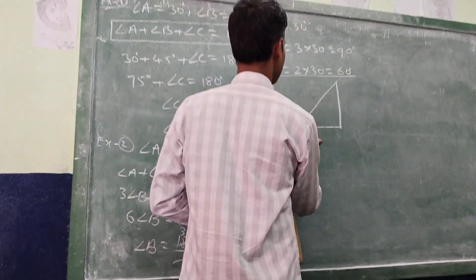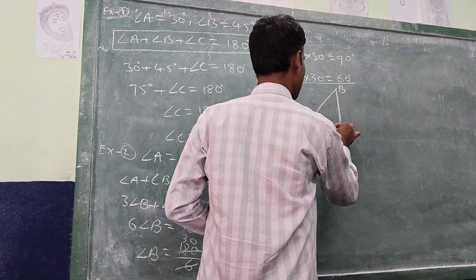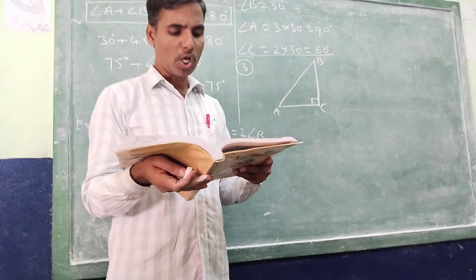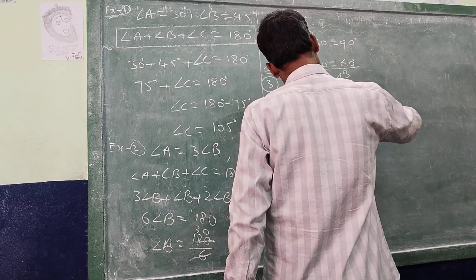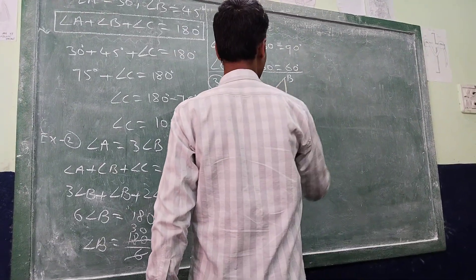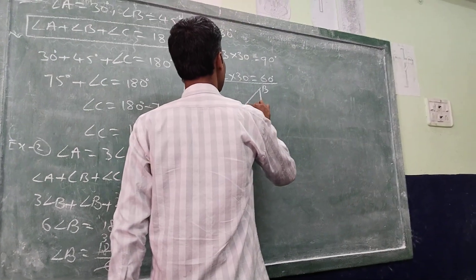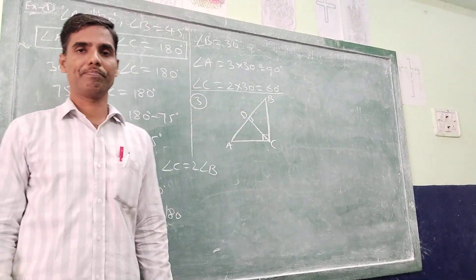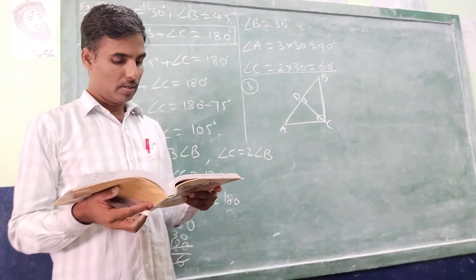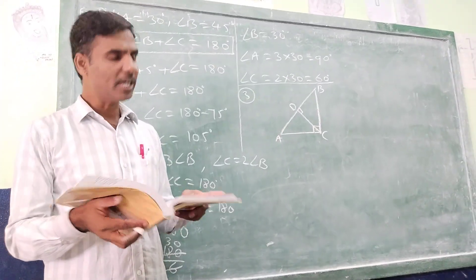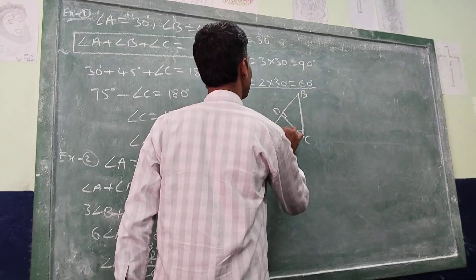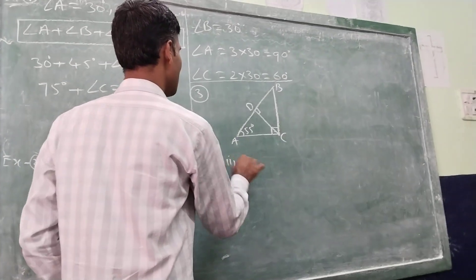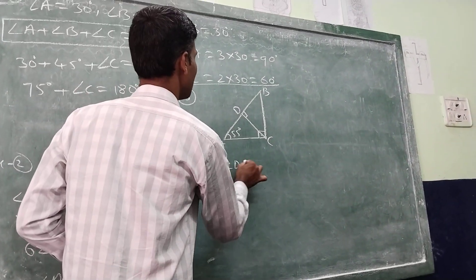Triangle ABC has a right angle at C, meaning angle C equals 90 degrees. CD is perpendicular to AB, which means CD makes a 90 degree angle with AB. Angle A is equal to 55 degrees. We have to find angle BCA and angle DCA.